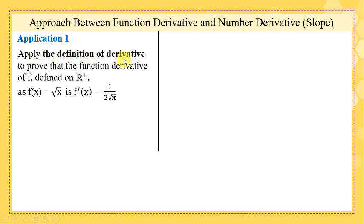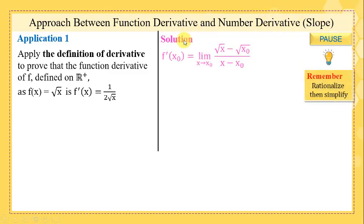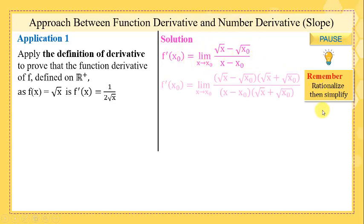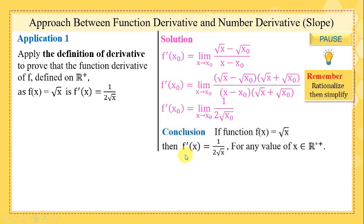Application: apply the definition of derivative to prove that if f(x) = √x, then f'(x) = 1/(2√x). We apply the definition of derivative at x = x₀. We rationalize, then simplify and do the calculations, and we get the answer 1/(2√x₀).